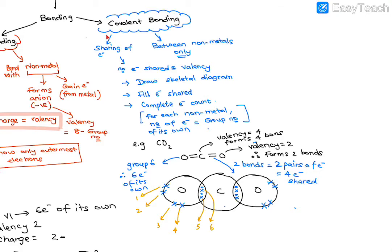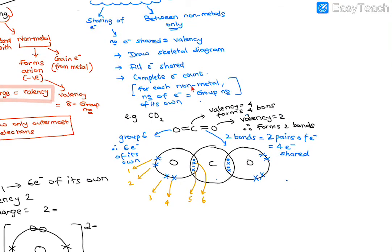How do you draw a dot-and-cross diagram for covalent compounds? First, draw the skeletal diagram. Then draw the circles, fill in the shared electrons at the center, and complete the electron count. For each non-metal, the number of electrons it has of its own should equal the group number.